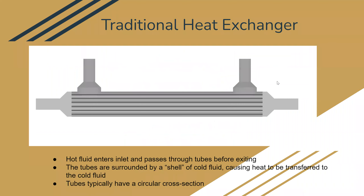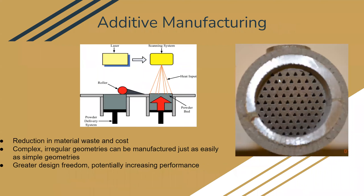The traditional heat exchangers do the typical shell and tube single and double passes. It's a typical circular cross-section where the fluid goes through just the tubes or just the shells and doesn't switch in between them. The purpose of this paper was to use additive manufacturing to experimentally test new novel heat exchanger flows using a counter switch core in the middle that allows it to switch from the tube and the shell flow.